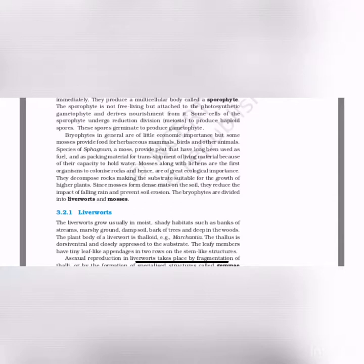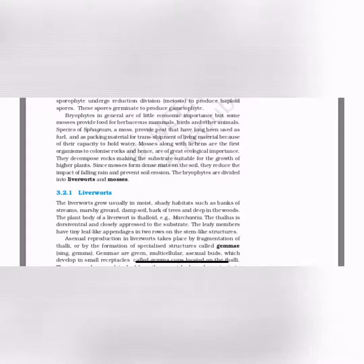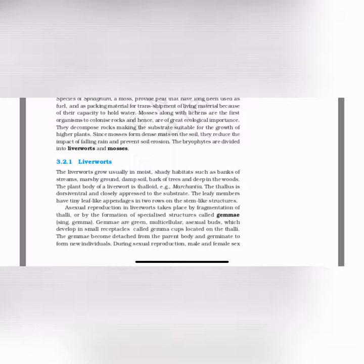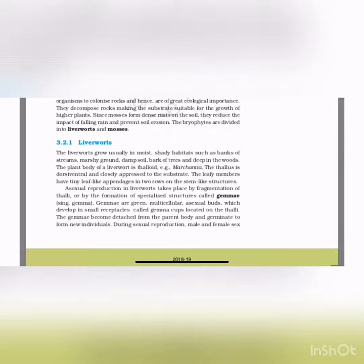The zygote does not undergo reduction division immediately, as the plant body must ultimately be haploid. The diploid zygote produces a multi-nucleated body called the sporophyte, which is not free-living but attached to the photosynthetic gametophyte, deriving nourishment from it. Some cells of the sporophyte undergo reduction division to produce haploid spores, which germinate to produce gametophytes. Bryophytes are of little economic importance generally, but some mosses provide food for herbivorous mammals and birds. Sphagnum moss provides peat used as fuel and packing material due to its water-holding capacity. Mosses and lichens are the first organisms to colonize rocks, decomposing them and making substrate suitable for higher plants; dense moss mats also reduce soil erosion.